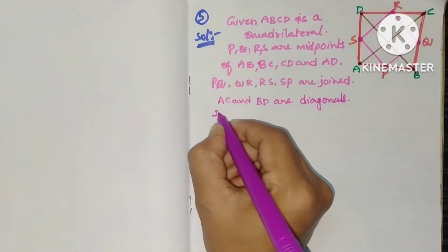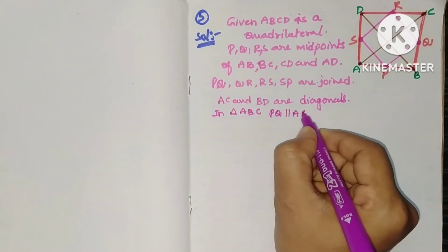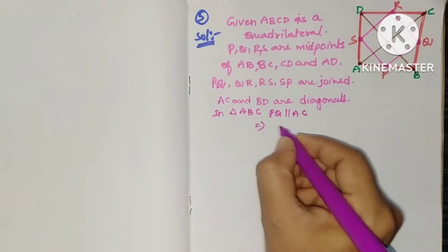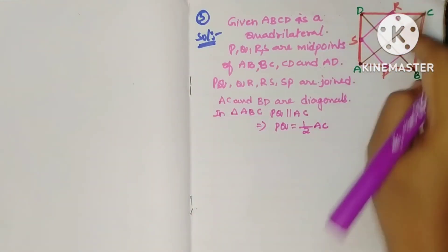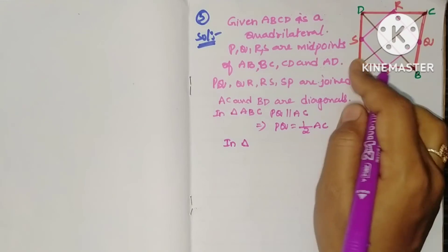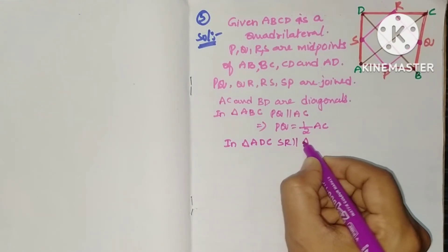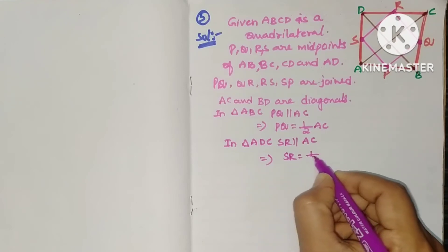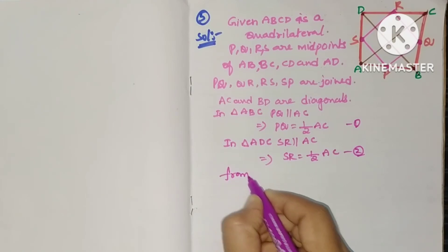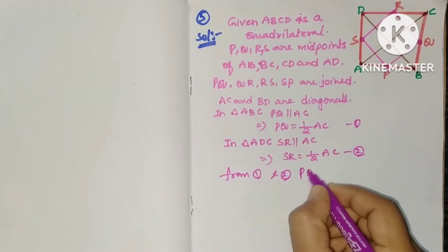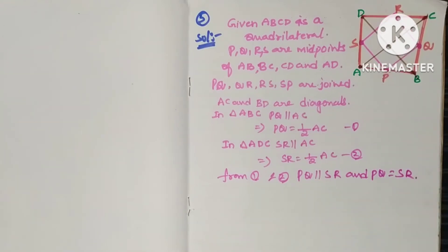In triangle ABC, PQ is parallel to AC and P, Q are midpoints, so PQ equals half AC. Similarly in triangle ADC, SR is parallel to AC, so SR equals half AC. From these two results, PQ is parallel to SR and PQ equals SR.